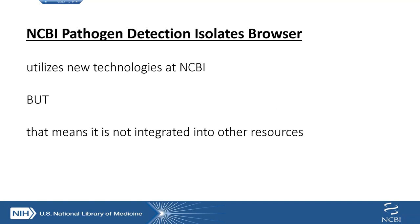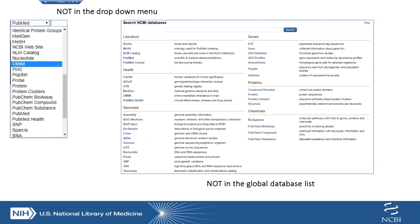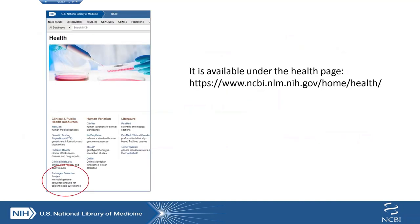The Pathogen Detection Isolates Browser is utilizing new technologies at NCBI, including things like Solr. Because we are trying to develop this very quickly and get it out to our collaborators as soon as possible, it's not fully integrated into other resources. Some of you will be familiar with the drop-down database menu on the left — you won't see Pathogen there and you won't see it in the global database list. It's actually kind of hidden under 'health.'